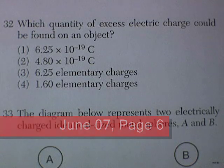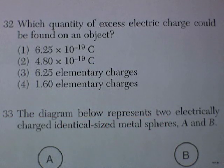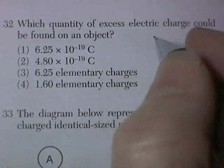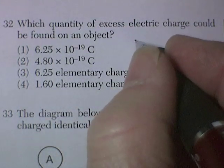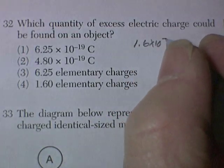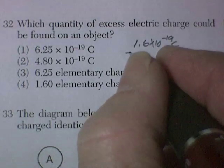We're on June 07, page 6, question 32. Which quantity of excess electric charge could be found on an object? This is kind of a vocabulary question. You need to know that a single elementary charge is 1.6 times 10 to the negative 19 coulombs.